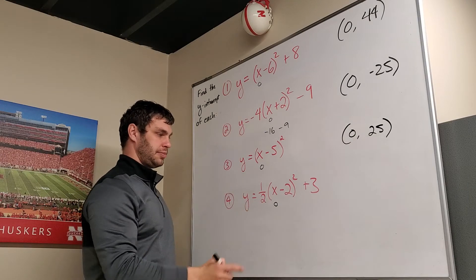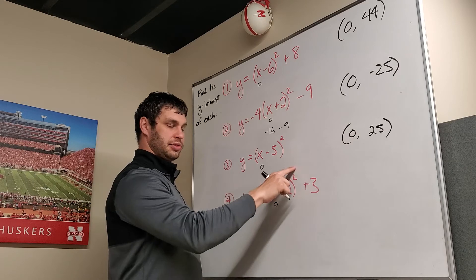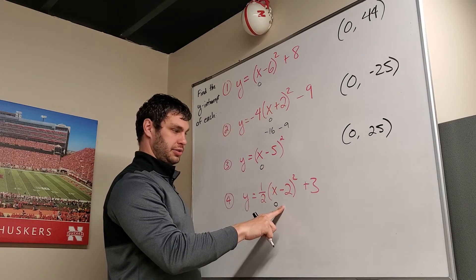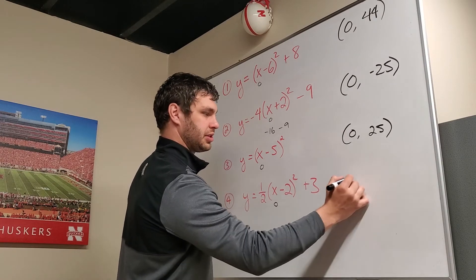Plug in 0 for x on number 4. It gives you 0 minus 2 is negative 2. Negative 2 squared is 4. Half of 4 is 2. 2 plus 3 is 5. So we have (0, 5) for the y-intercept.